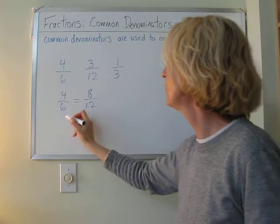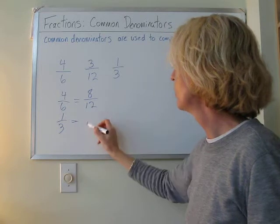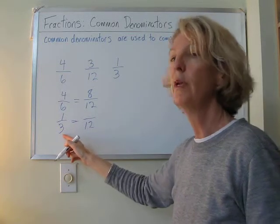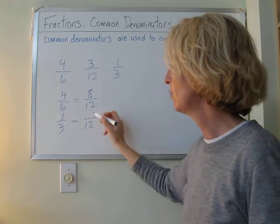Now we're going to have to do the same thing with 1 third. And our common denominator is 12. 3 multiplied by what gives us 12? 4. And 1 times 4? 4.